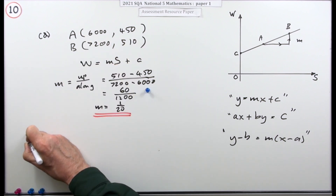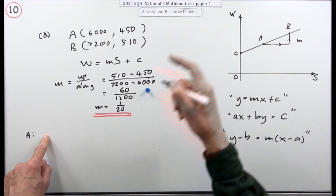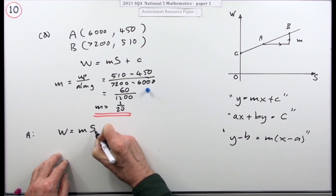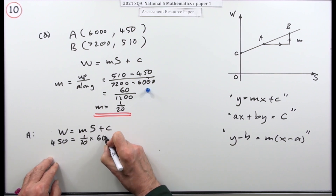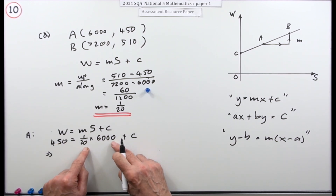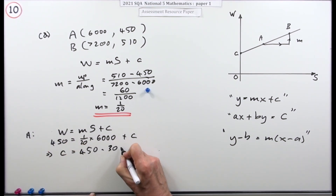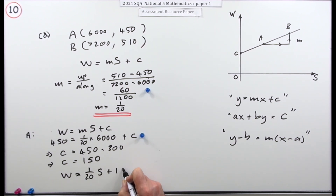I'll choose point A because it has simpler numbers. I'm going for the form w equals ms plus c. So: 450 equals one twentieth of 6,000 plus c. One twentieth of 6,000 is 300. Taking the 300 across: c equals 450 minus 300, so c equals 150. Now put it together: w equals one twentieth of s plus 150.